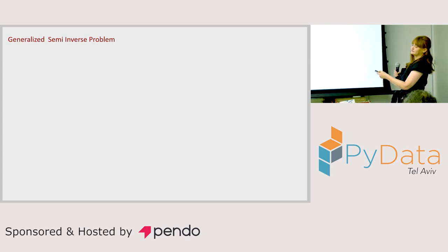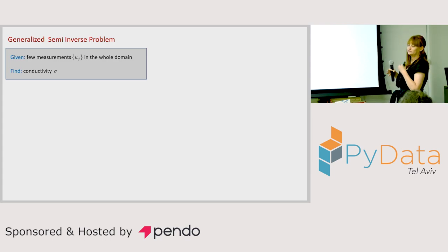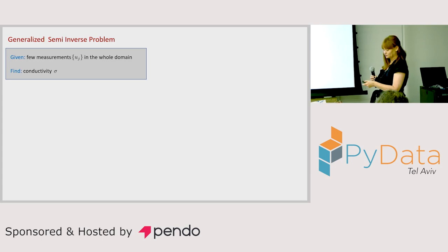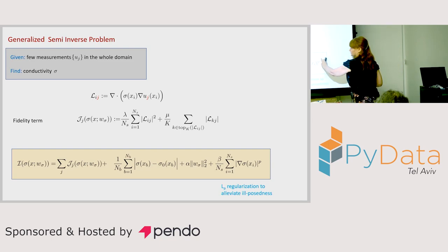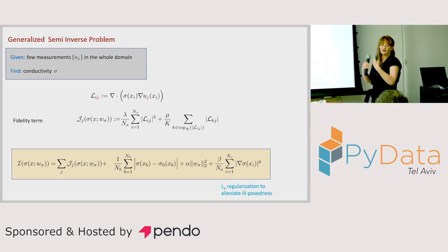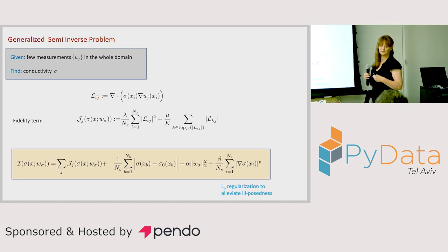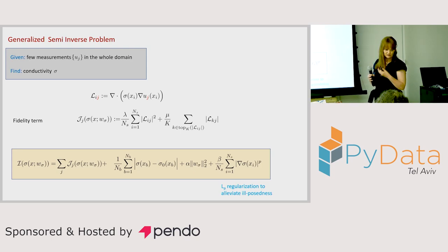Next, we solve the inverse problem: given measurements of U, we want to find sigma. We use several measurements together because they share a common sigma — it's like an ensemble of measurements. Using the same loss formula, I add regularization on sigma because we have prior knowledge that sigma is piecewise constant. We use an Lp norm as a constraint on sigma's behavior, which can be added very easily and derived automatically by TensorFlow or PyTorch.